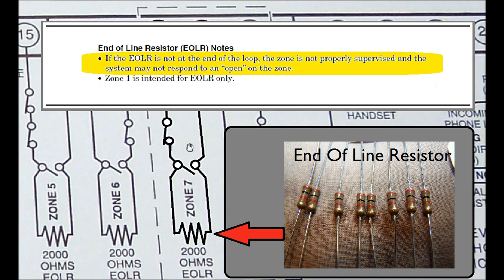If the end of line resistor is not at the end of the loop, the zone is not properly supervised, and the system may not respond to an open on the zone. So make sure this resistor is the last hookup in your loop.